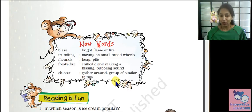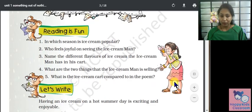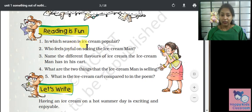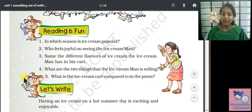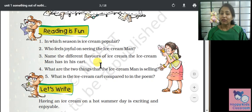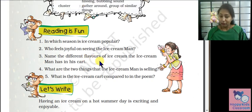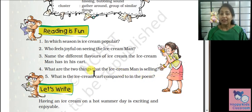Reading is fun. In which season is ice cream popular? Ice cream is popular in summer season. Who feels joyful on seeing the ice cream man? Children feel joyful. Name the different flavors: the flavors are vanilla, chocolate, and strawberry. What two things is the ice cream man selling? Ice cream and chilly drinks. What is the ice cream cart compared to? It is compared to flower beds.